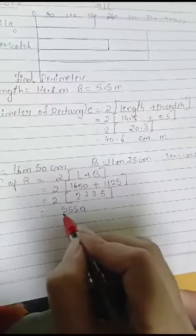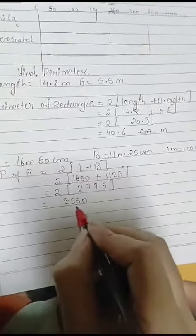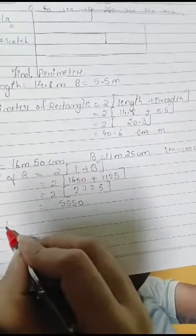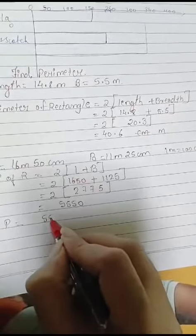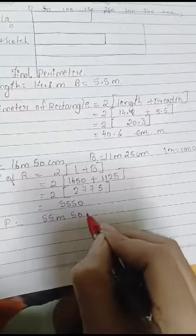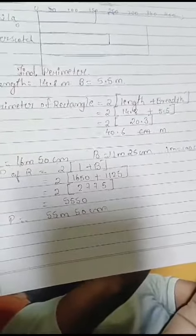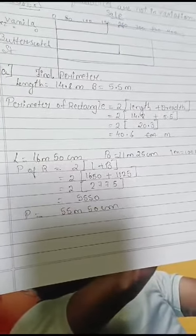Now we have to convert again this into this unit. If we divide this by 100, the perimeter will be 55 meter 50 centimeter. This is our answer. You try once.